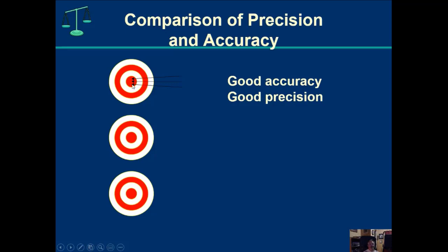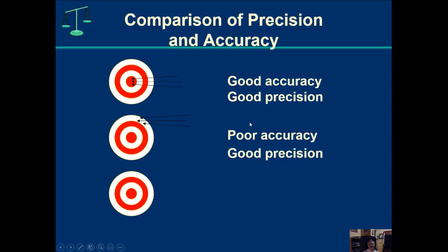This is an example of good accuracy and good precision. What about poor accuracy but good precision? In this case, I've shot three arrows and they each go to the same place on the target, but it's not the bullseye. So my accuracy is poor but my precision is good. For example, if I get on and off the scale three times and each time it says 180 pounds but I know that's not the true value, I need to calibrate my scale.